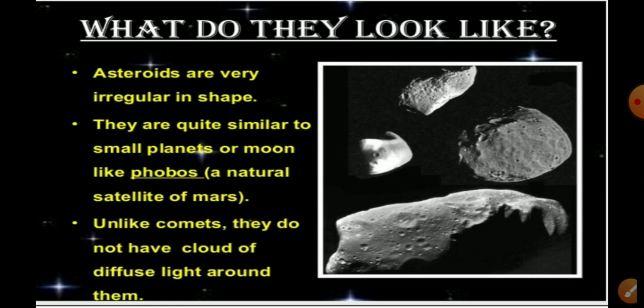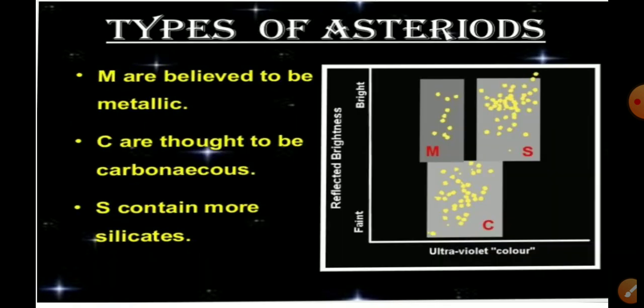Asteroids are classified into three types. The first type is M asteroids, which are believed to be metallic. The second type is C asteroids, which are thought to be carbonaceous. The third type is S asteroids, which are silicate type. This is all about the member asteroids.